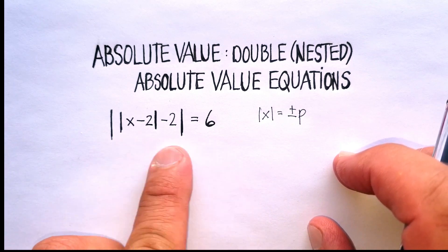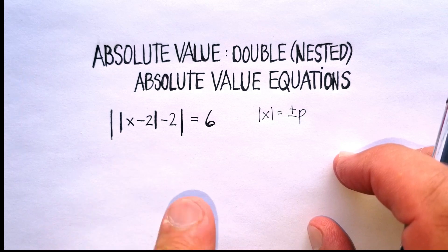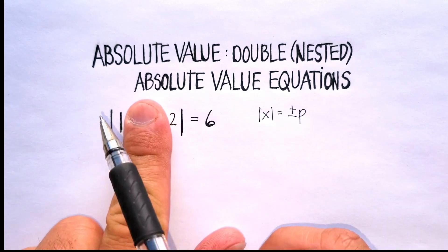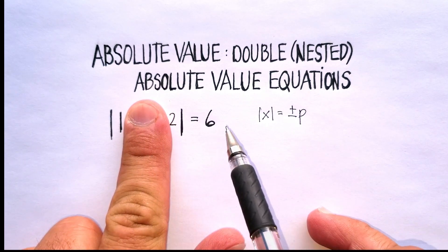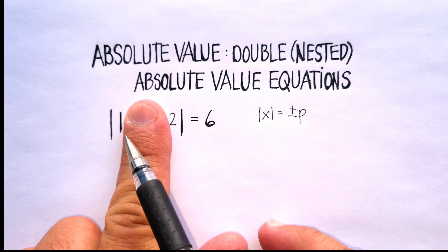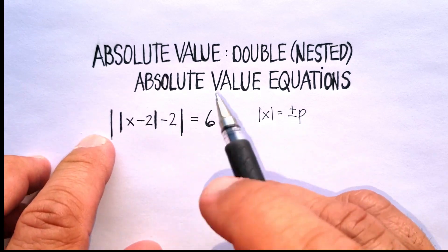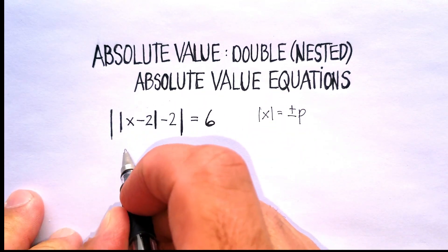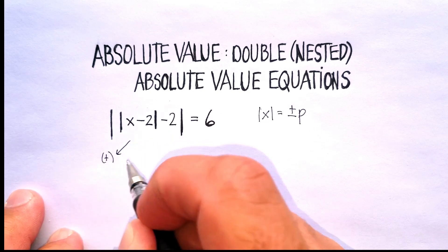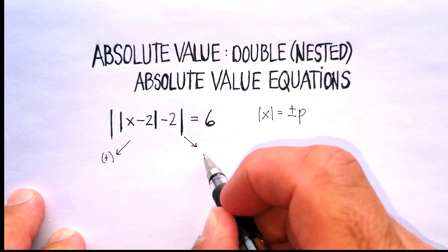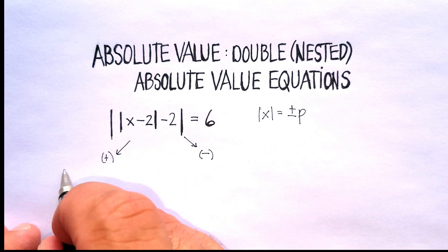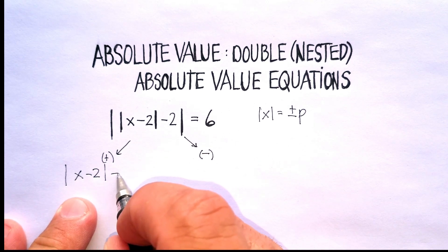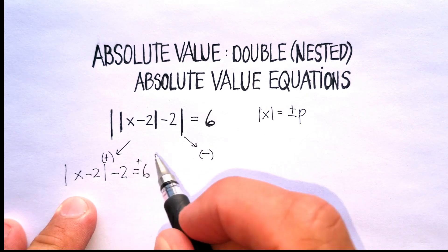When you have a double-nested absolute value, you basically do this in two stages. Initially, you're going to ignore the first part — the inner nested value. You'll have the absolute value of whatever is inside equal to 6, and we're going to make the positive and negative cases there. Whenever you split this up into two cases, you remove the absolute value signs. So here's our positive case, and here is our negative case. Now let's remove the absolute value signs on the outside, and we're going to get x minus 2.